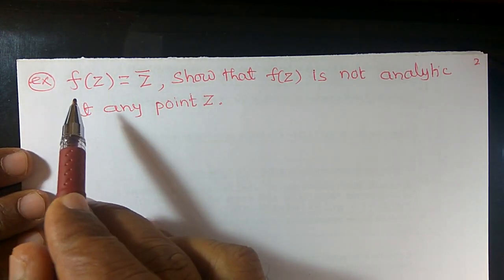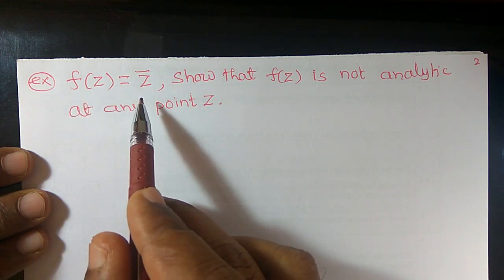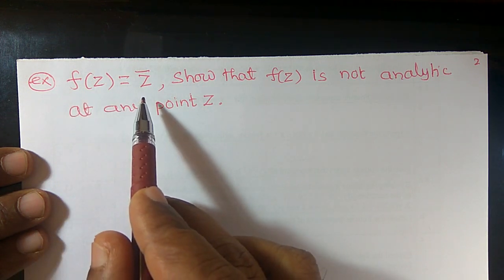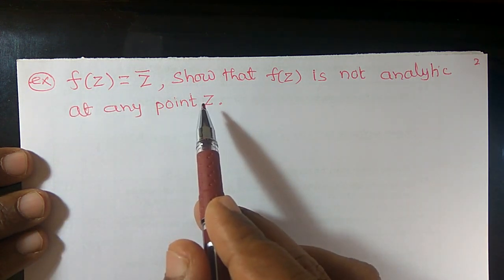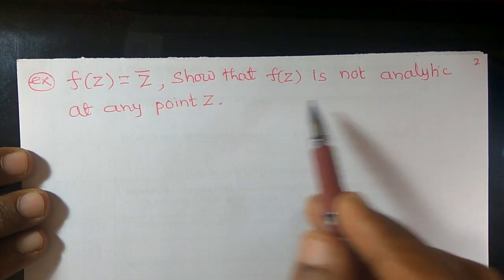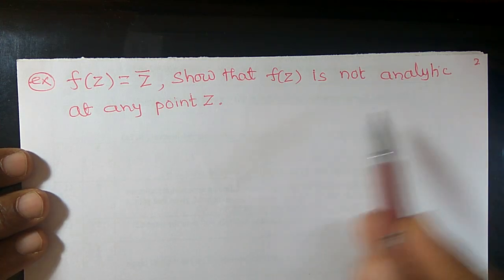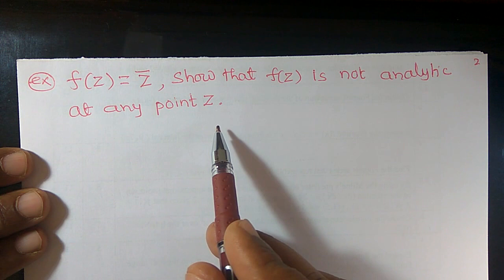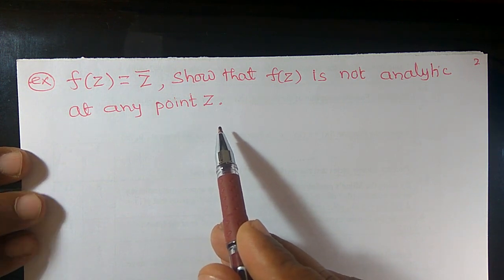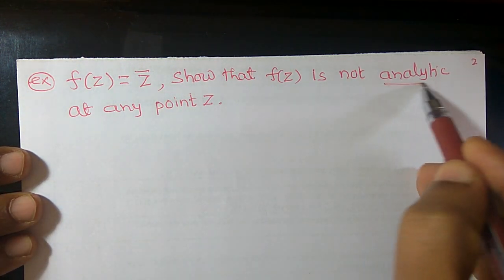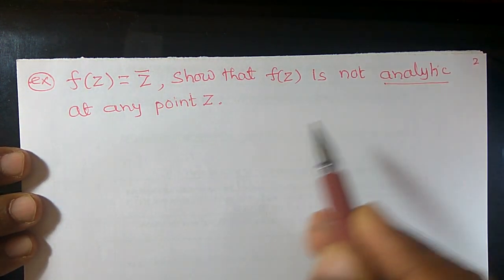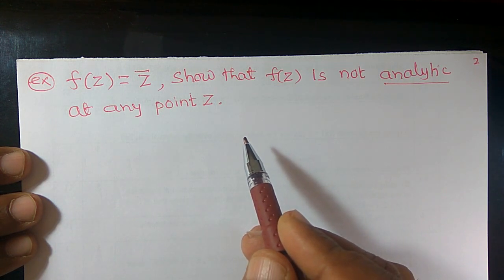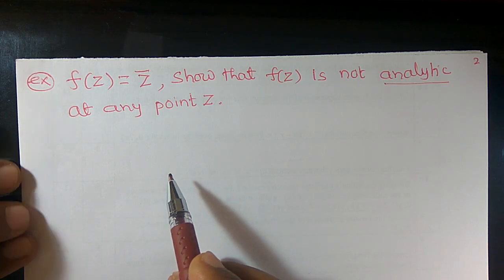Here it is given that f(z) = z̄, where z̄ means the conjugate of z. We want to show that f(z) is not analytic at any point z₀. Recall: a function is analytic if it is differentiable at z₀ and at every point in some neighborhood of z₀.